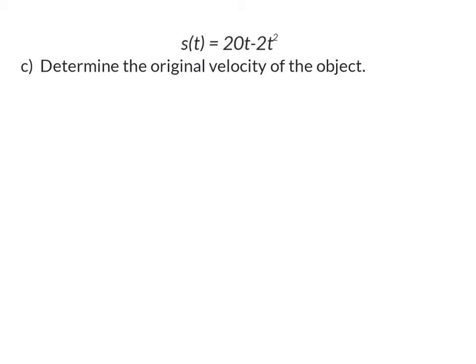Question C: Determine the original velocity of the object. We know that velocity is the first derivative, and we calculated the first derivative in the previous question as 20 minus 4t. We want the velocity when no time has passed, so we substitute zero into t's place, and the original velocity was 20 meters per second.